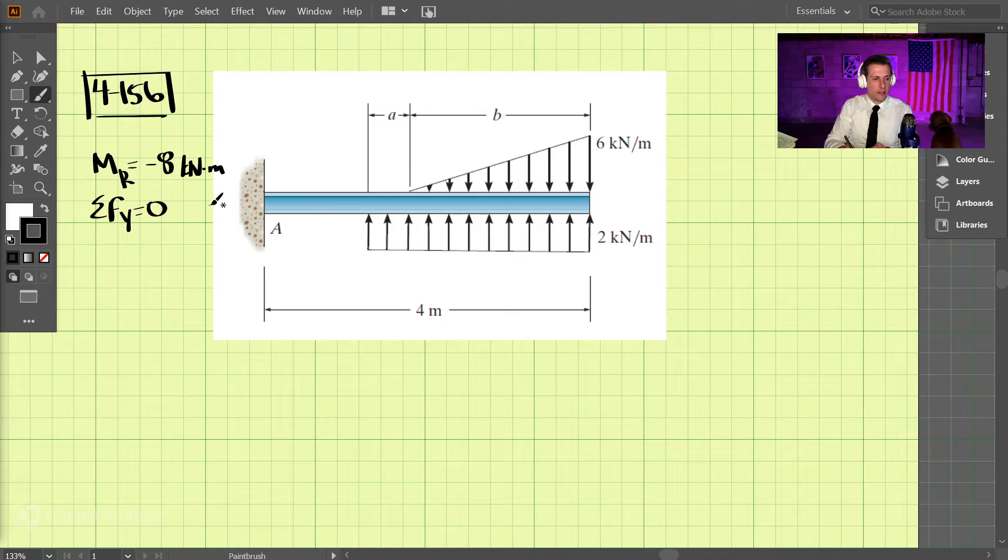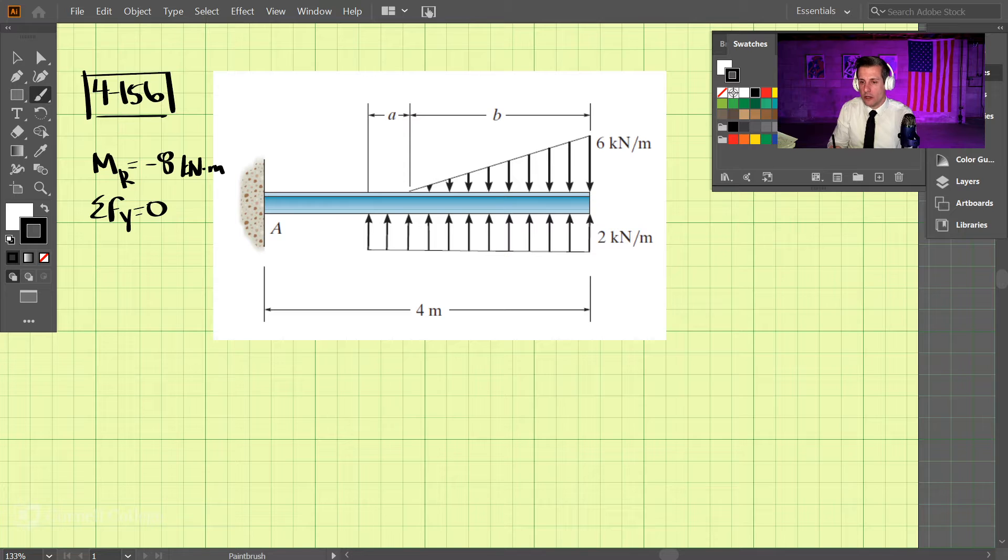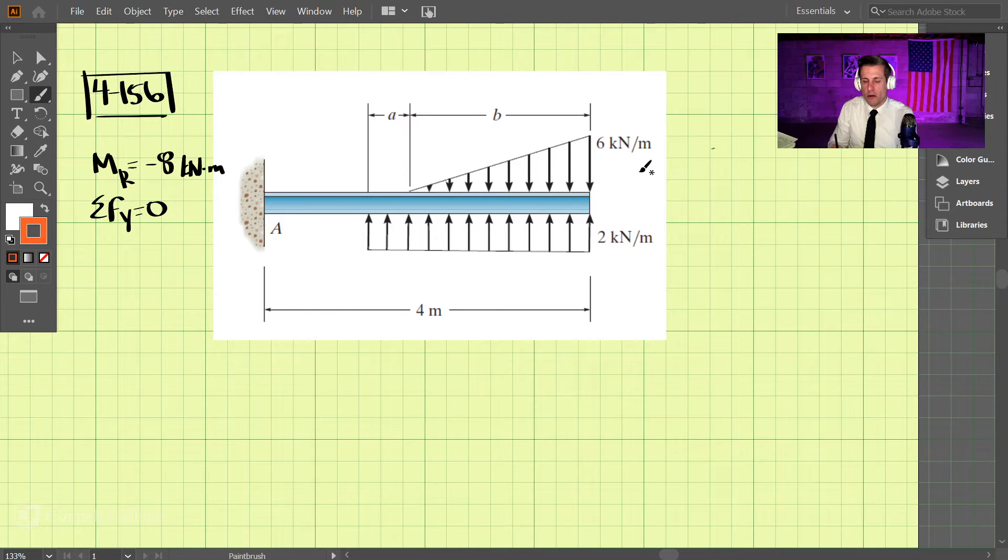Okay, so let's do problem 4156. We're given this loading condition has a triangular distributed load on the top and a rectangular one on the bottom. The sum of all the forces equals zero, and the resultant moment—the sum of all the moments—is eight kilonewtons clockwise. If we use counterclockwise as positive direction, this is negative eight kilonewtons. The first thing we need to do when given a distributed load like this...